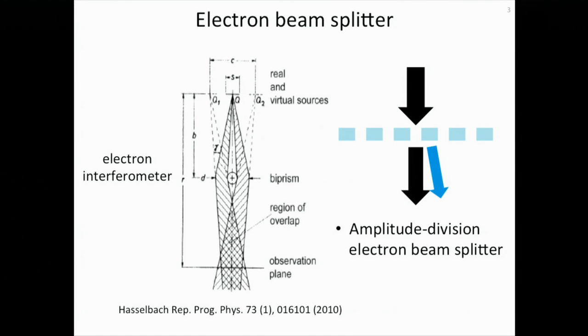There are many interesting applications of nanogratings. One of them is electron beam splitter, which is used in electron interferometer. Conventionally, people use a charged wire to separate the incoming electron beam, which is called electron biprism, and it is a wave-front division electron beam splitter. Because a nanograting can also diffract an incoming electron beam into multiple beams, it can also be used as an electron beam splitter, and it is an amplitude division electron beam splitter, which is favored by certain applications.